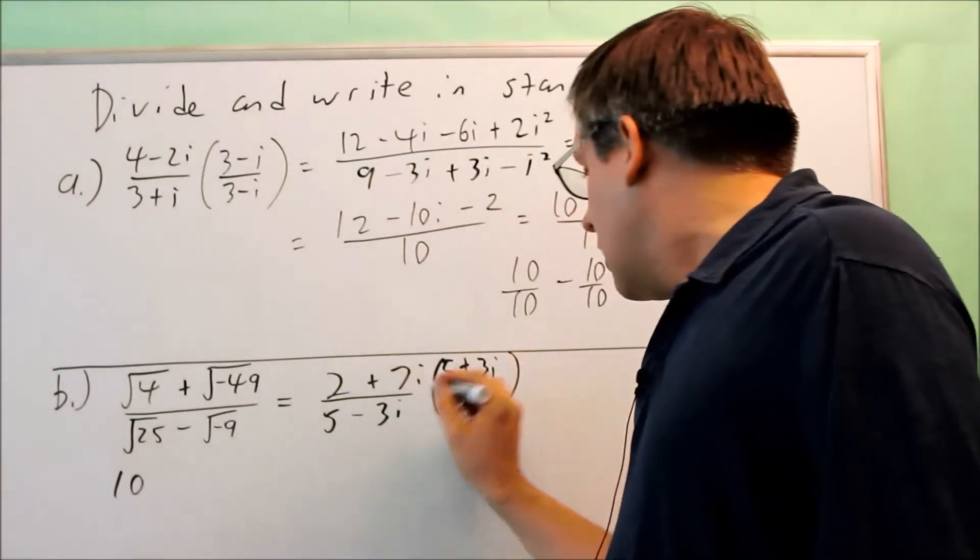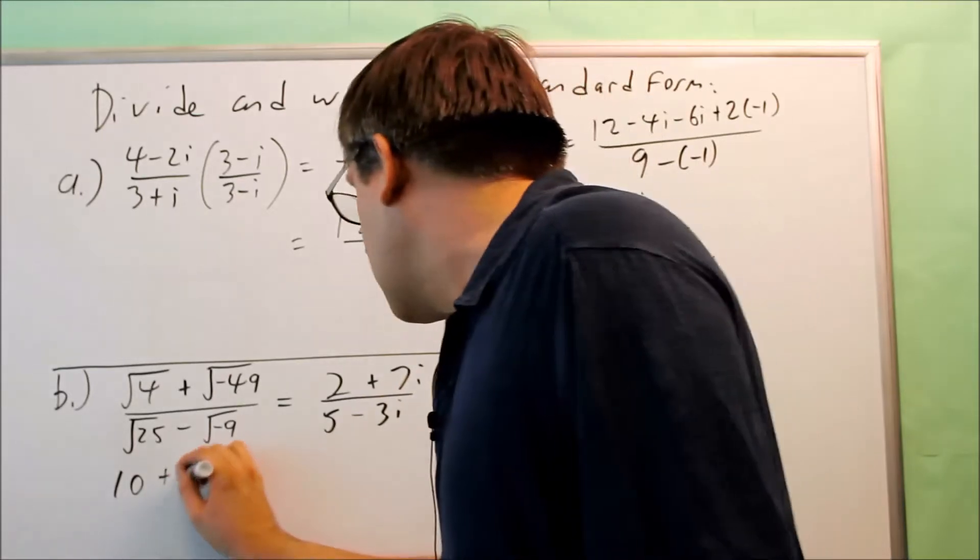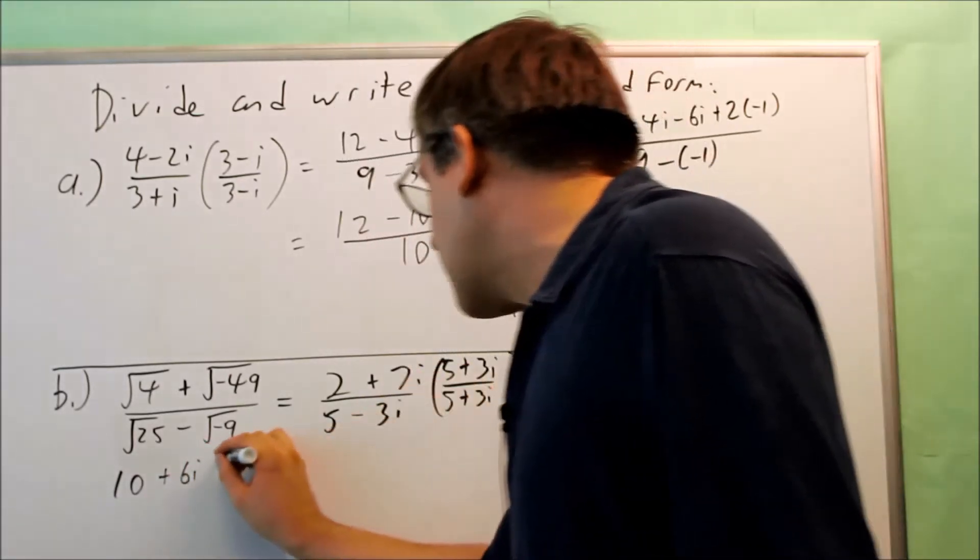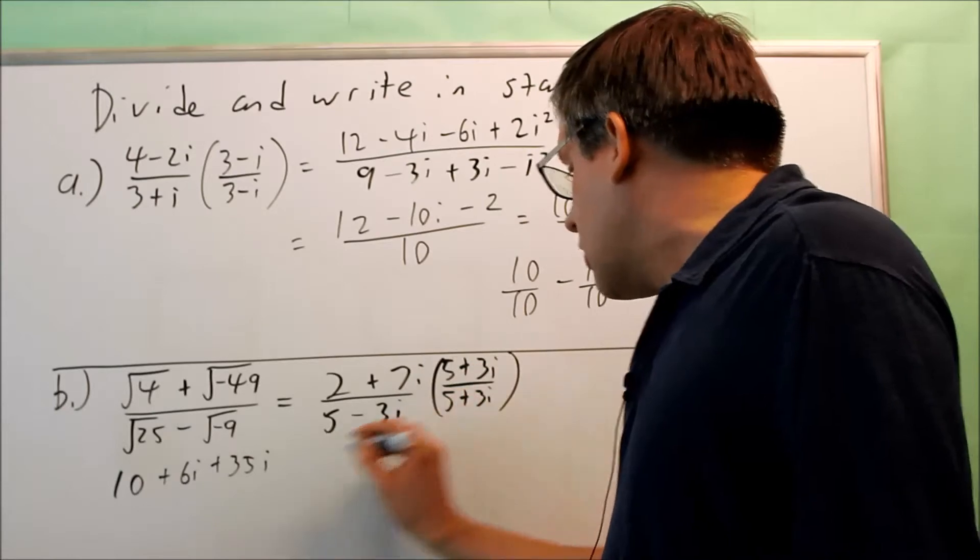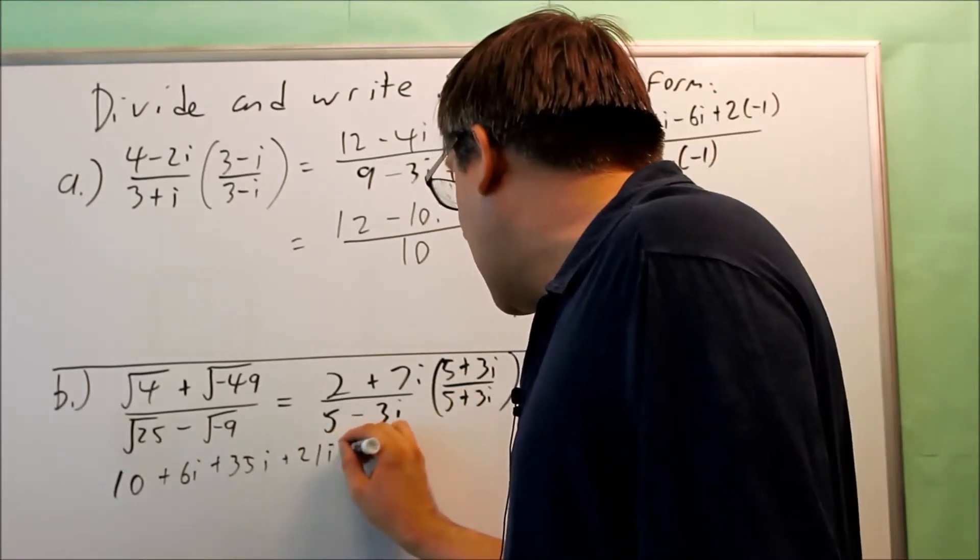So across the top, you're going to get 10. And then we get plus 6i. We get plus 35i. And then we get plus 21i squared.